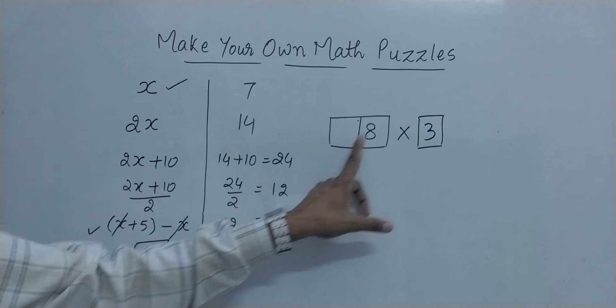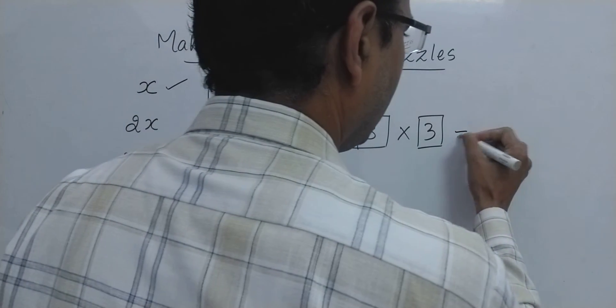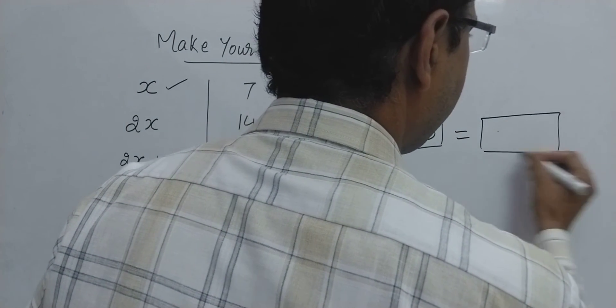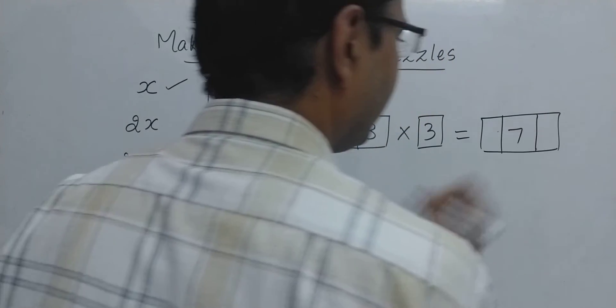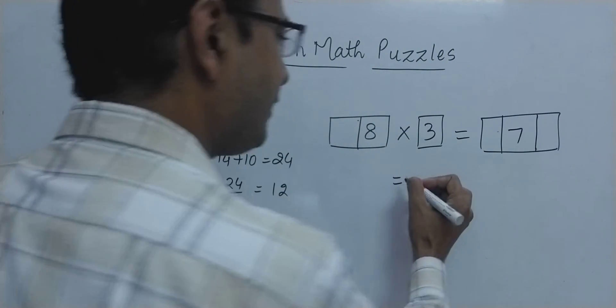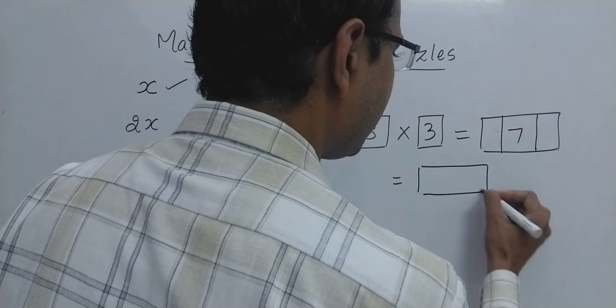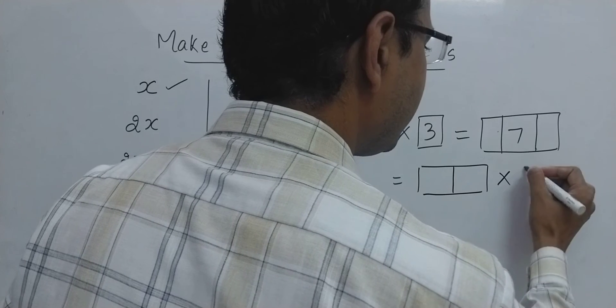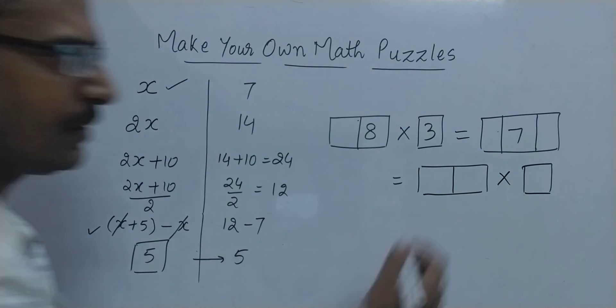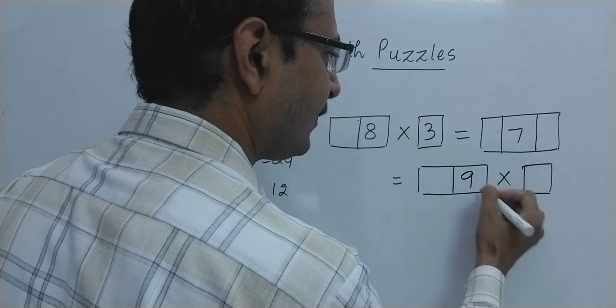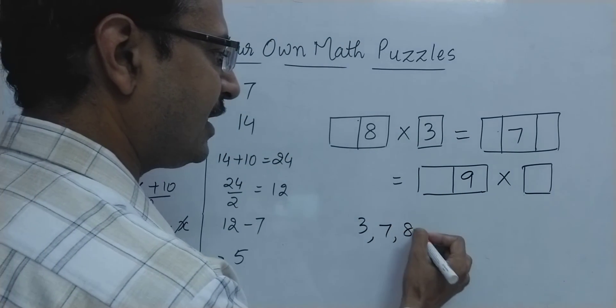So this is a 2-digit number multiplied by 3. It gives you a 3-digit number whose central digit is 7. And the same thing is obtained by multiplying yet another 2-digit number by a single digit number. And out of these 3, this digit is known to us. Now see, I have used 3, 7, 8, 9 in the puzzle.